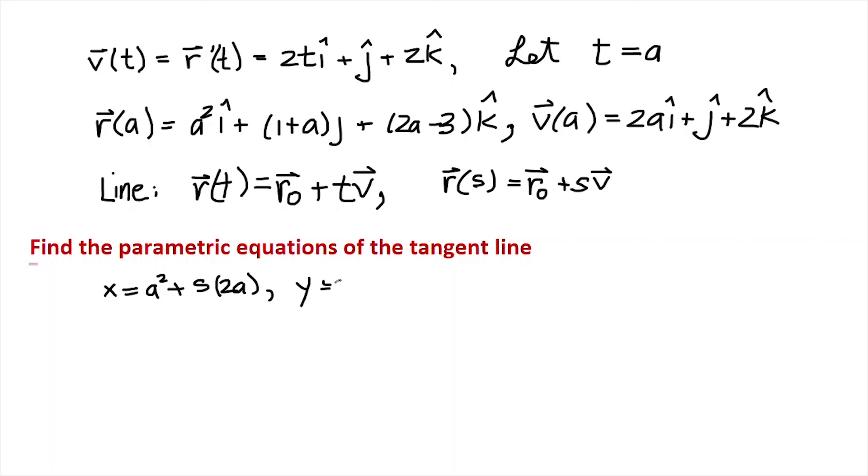Y is 1 + a, that's the r₀ component, plus s multiplied by just 1, of course, and then z is 2a - 3 + 2s.